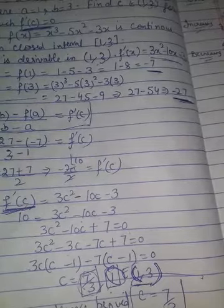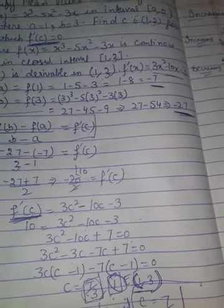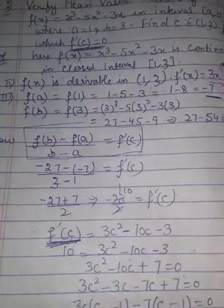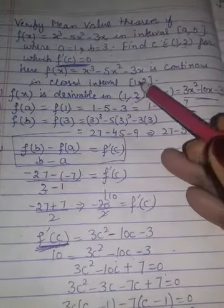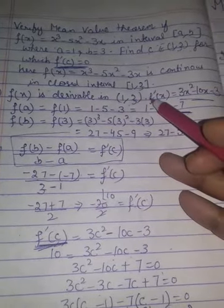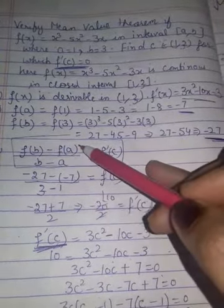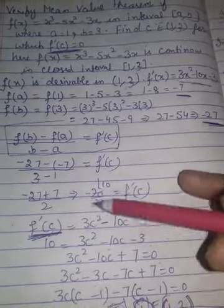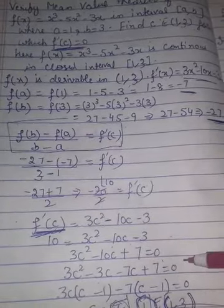I hope you got it, just like Rolle's theorem. This question you have to check two conditions: continuity in closed interval, derivable in open interval. After that exists c such that f(b) minus f(a) over b minus a equals f'(c). After putting all the values you will get this one.